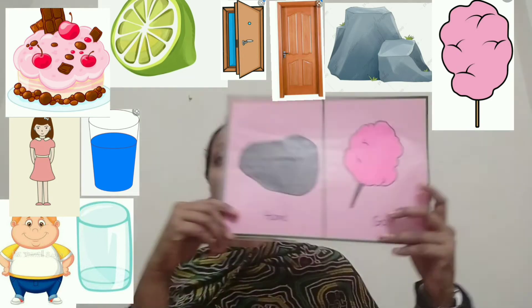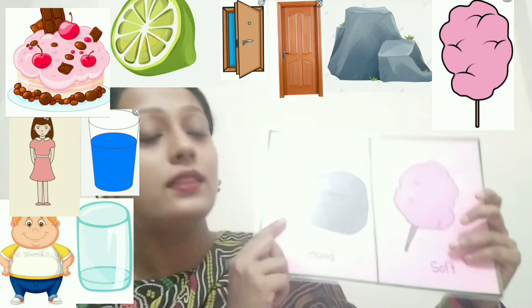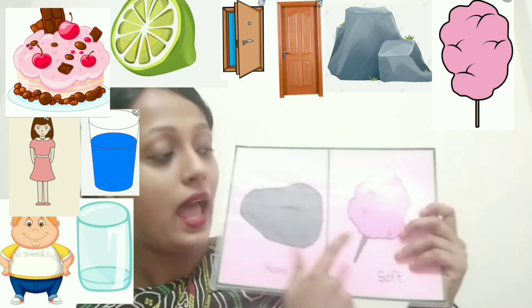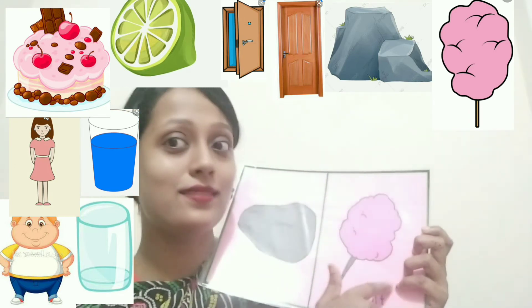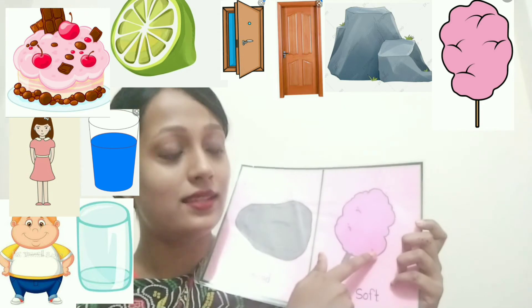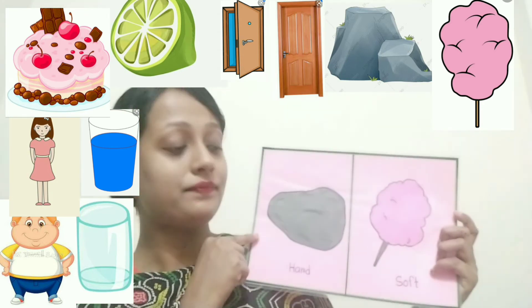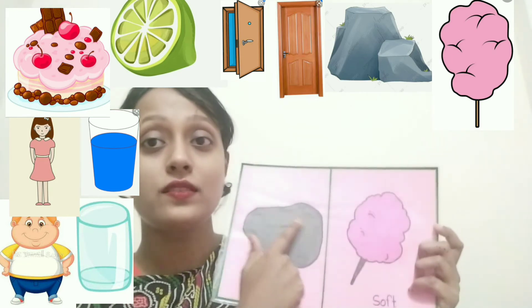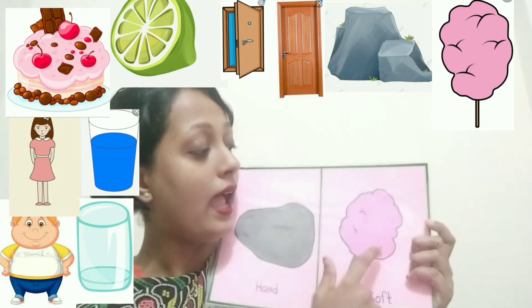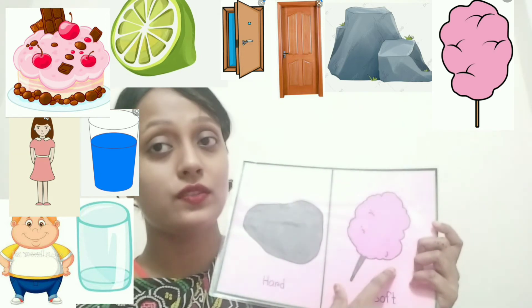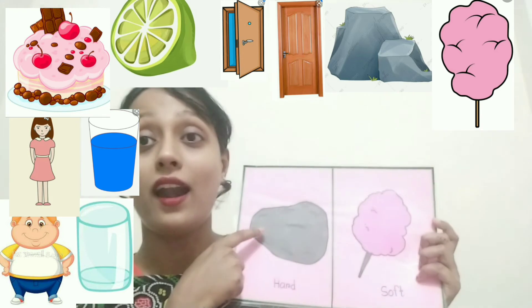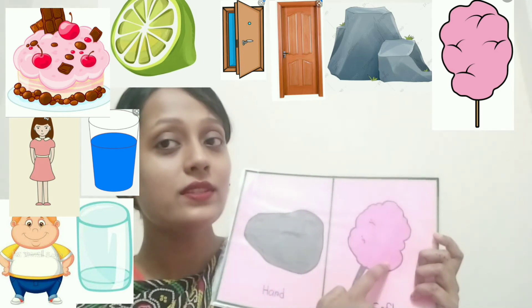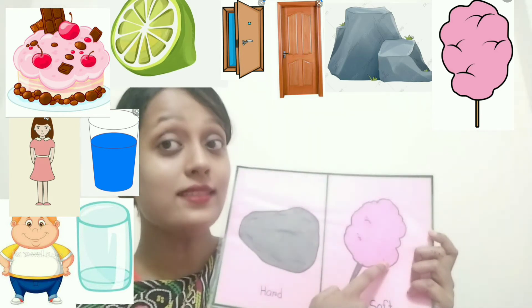The last opposite word. This is stone and this is candy floss — yes, this is so yummy, this is candy floss. We all know that stone is hard and candy floss is soft. So this is soft and this is hard. The opposite word of hard is soft, and the opposite word of soft is hard.